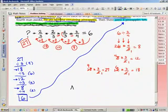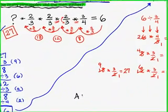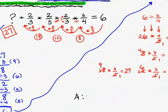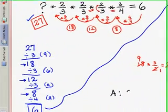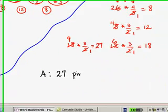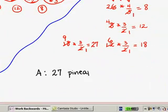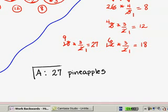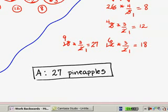So let's summarize our answer. The question says: how many pineapples did the men gather? The correct answer is twenty-seven pineapples. Please don't forget to put a box around your answer so that I can find it easily.